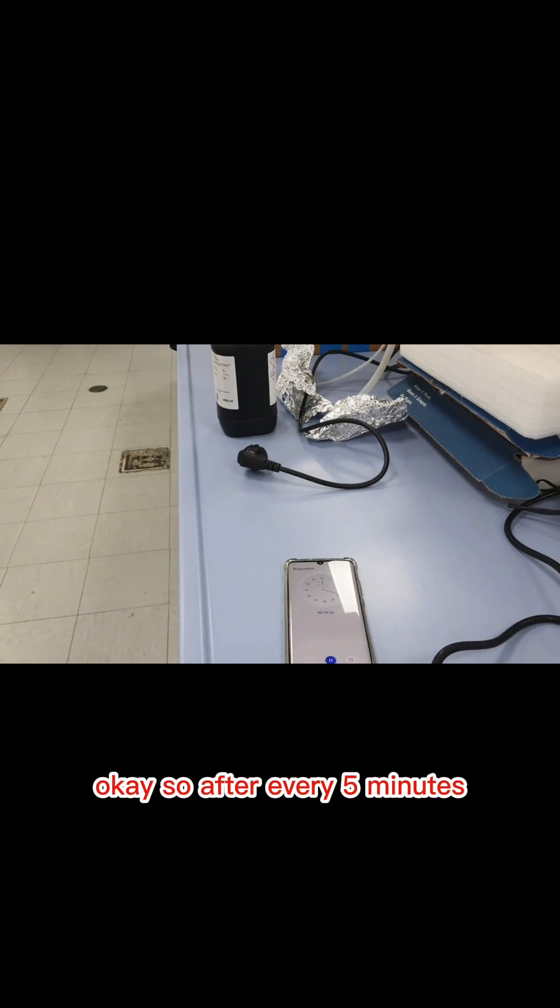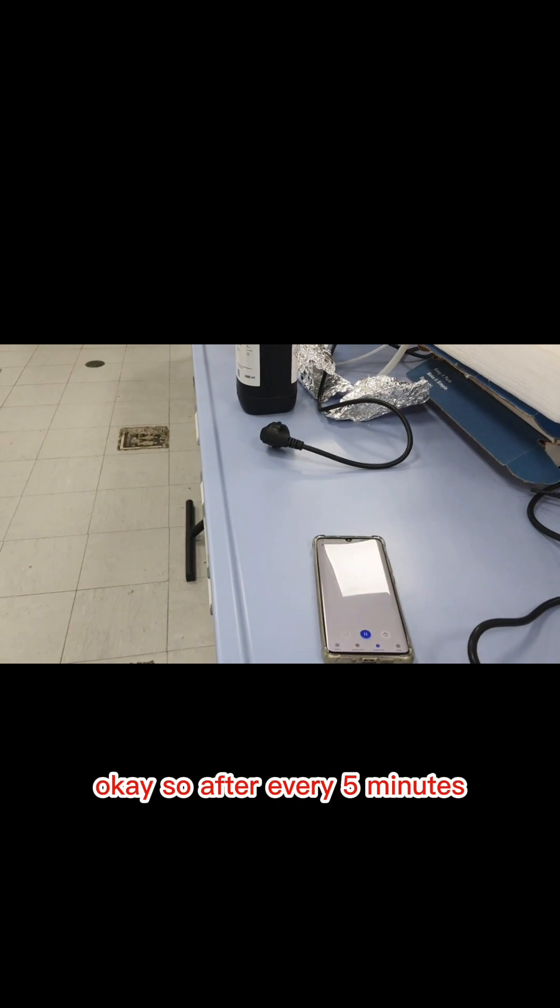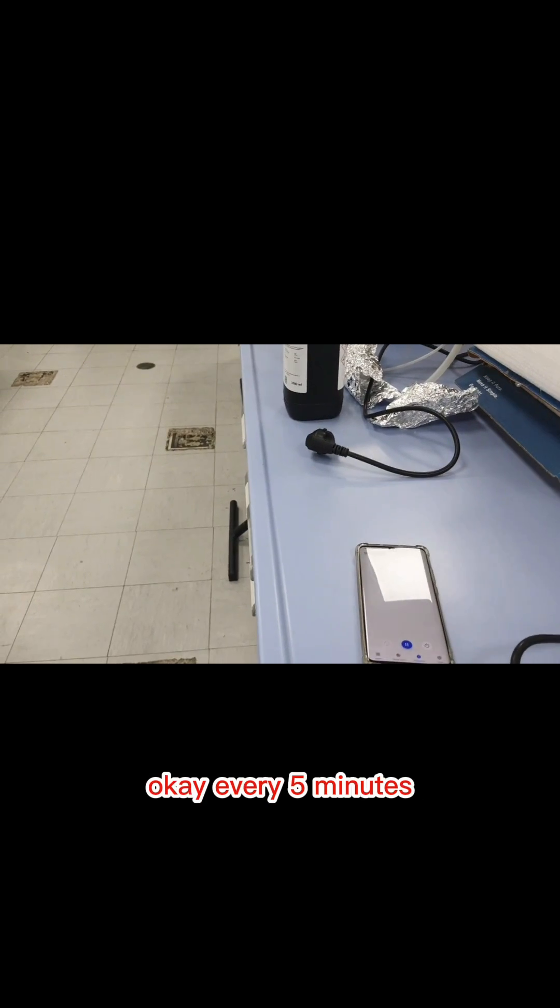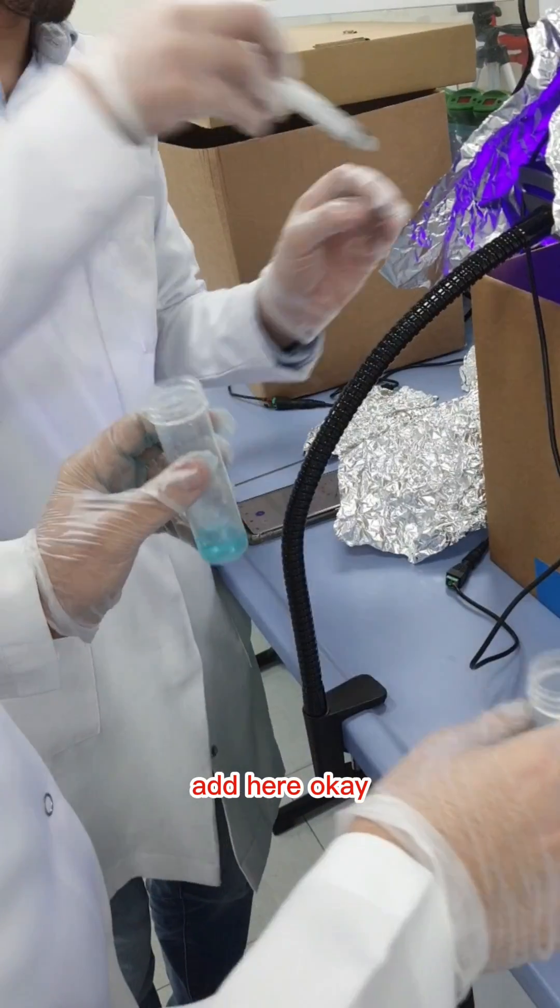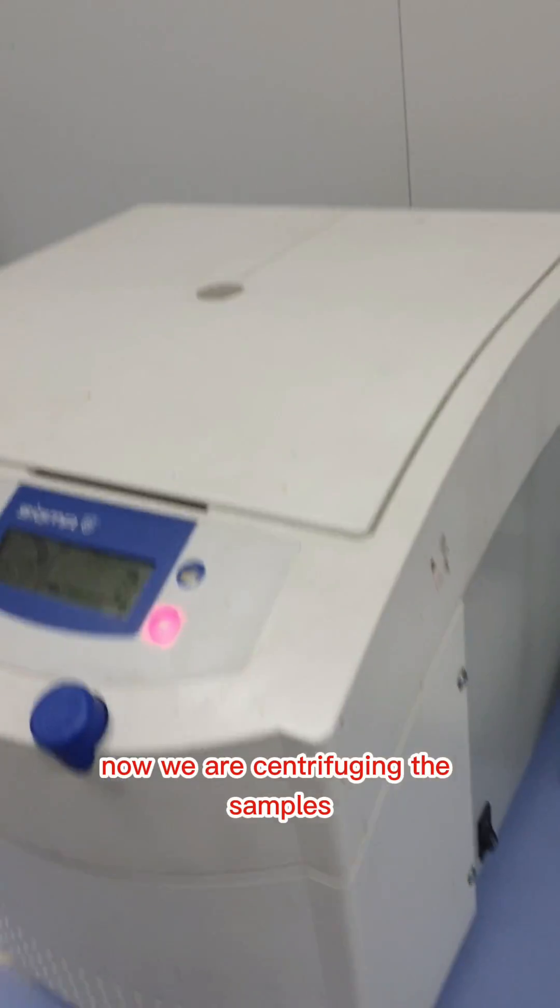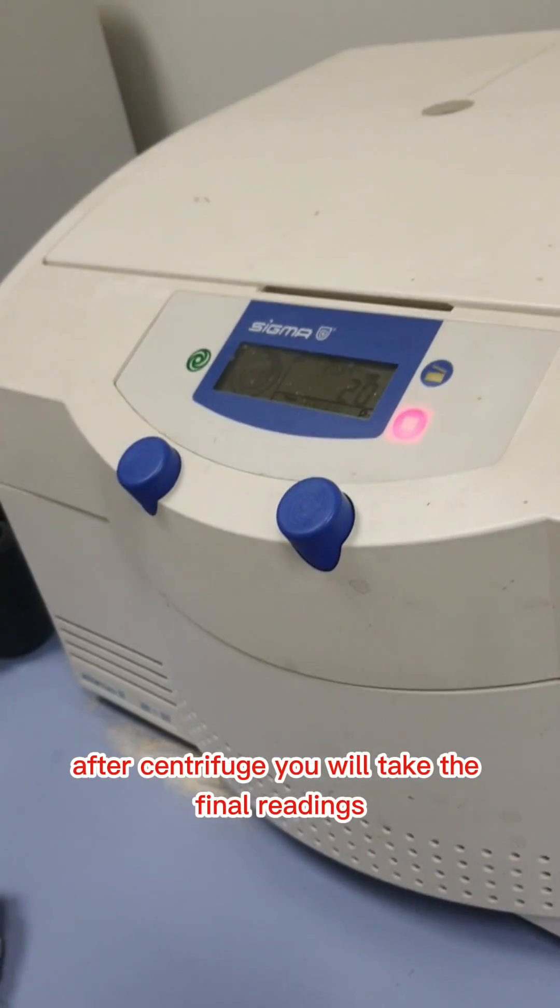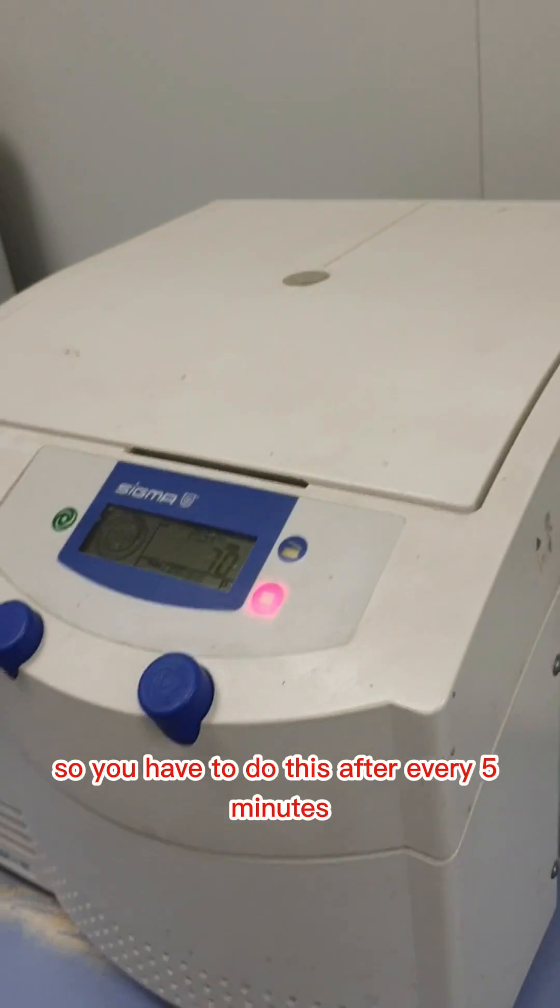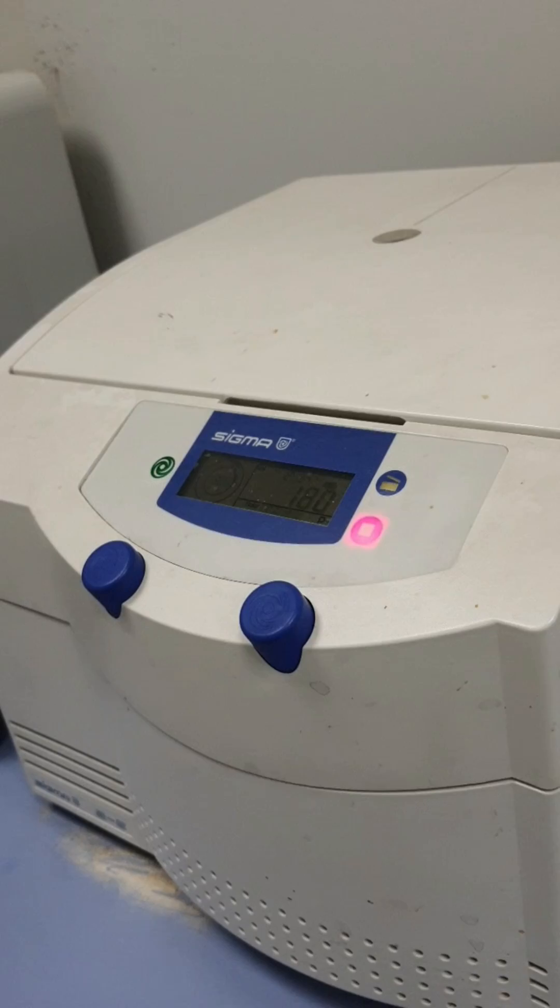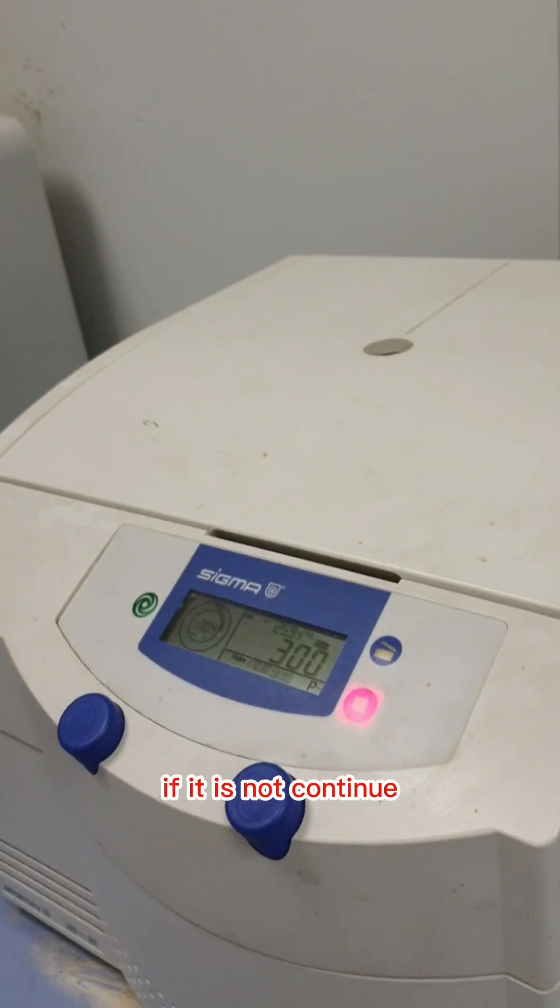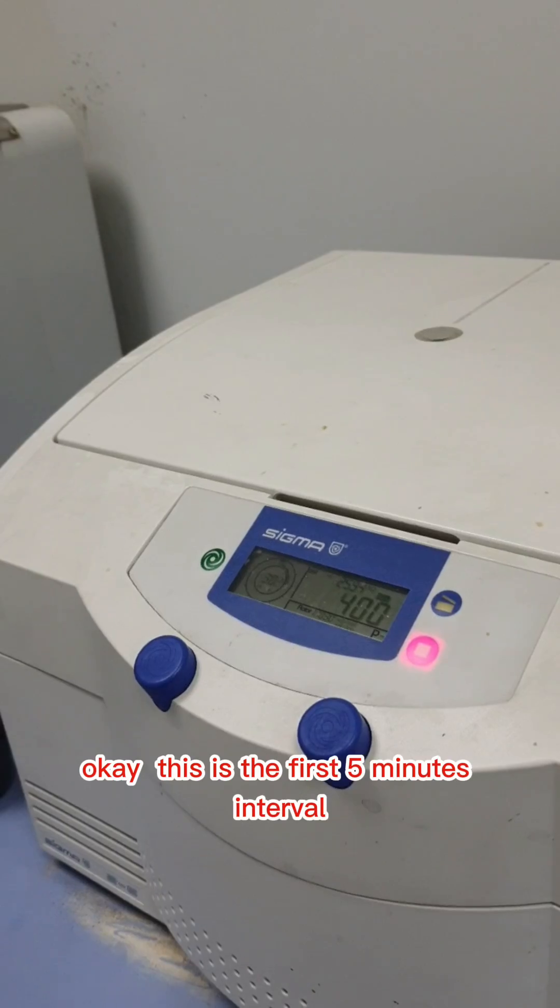After every 5 minutes, you have to take out the sample. We are checking out the samples using a syringe. Now we are centrifuging the samples. After centrifuge you will take the final readings. You have to do this after every 5 minutes till half an hour. If it is 100% removed, stop. If not, continue more 15 minutes.